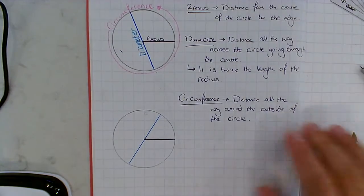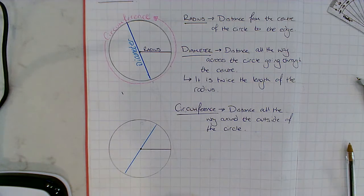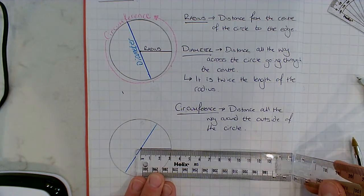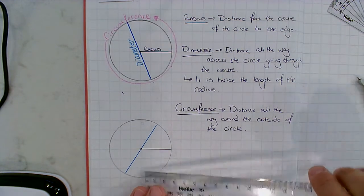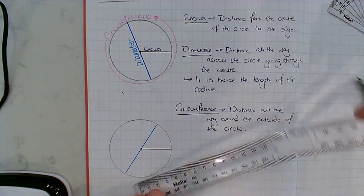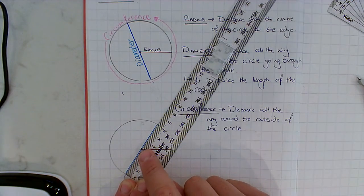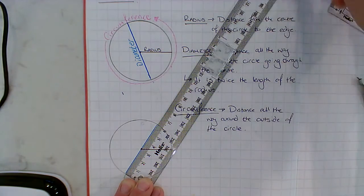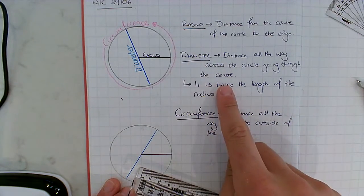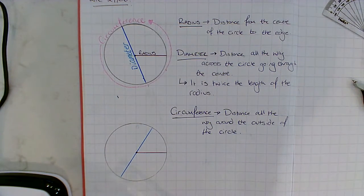Hopefully you now have everything that I've got on my page. We know how to measure our radius — place the ruler in the centre of our circle and measure the distance to the edge. We know how to measure our diameter with two methods: go from one edge of the circle, pass through the centre, and measure to the other edge. Or, use the fact that the diameter is twice the length of the radius — measure the radius and just double it.